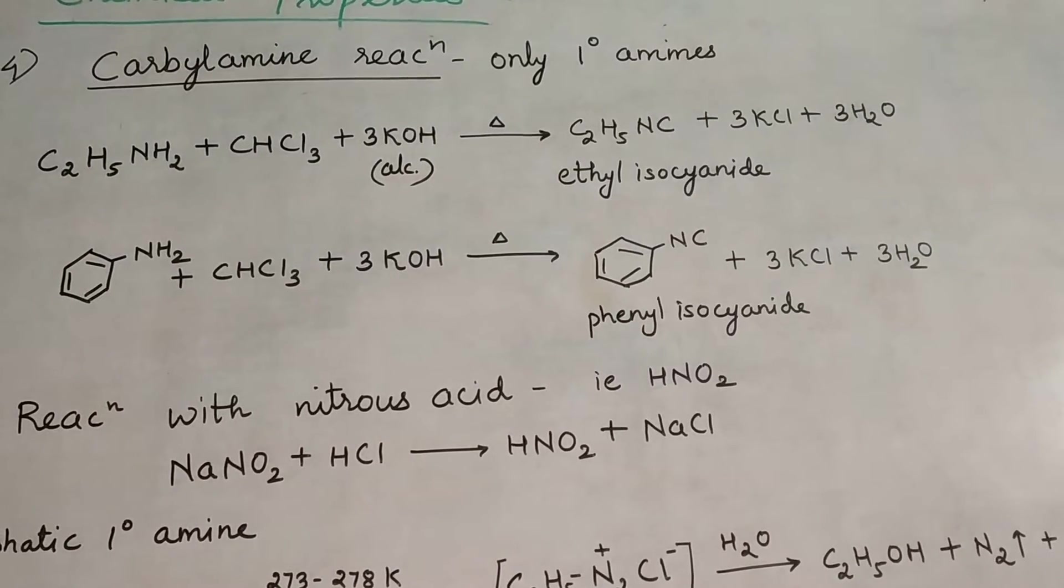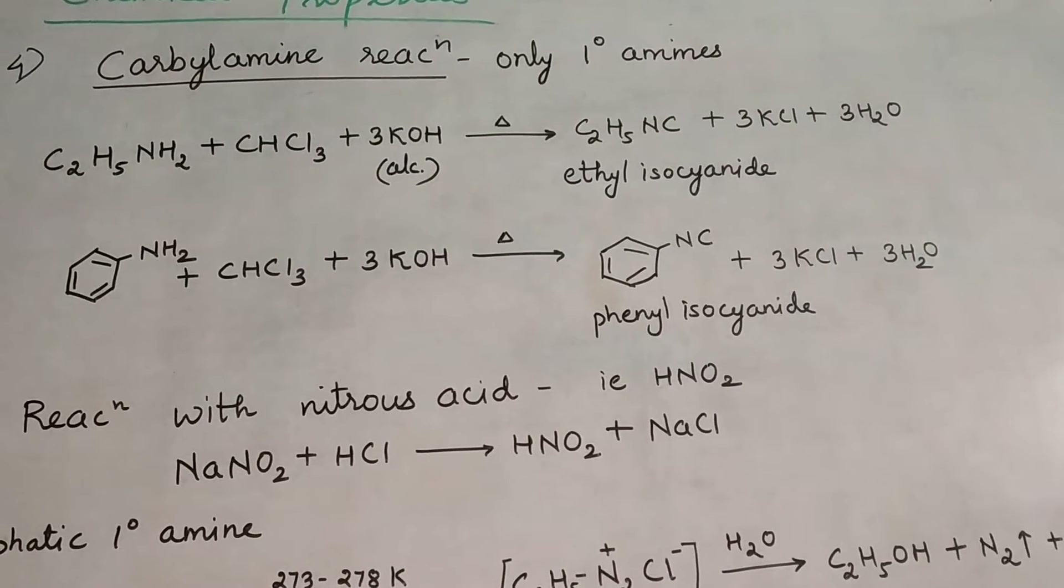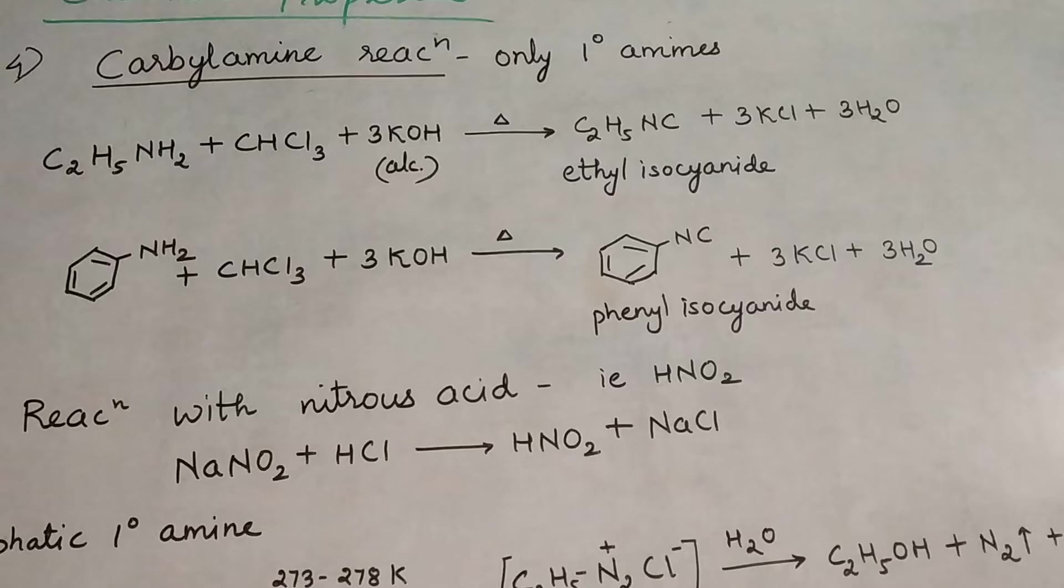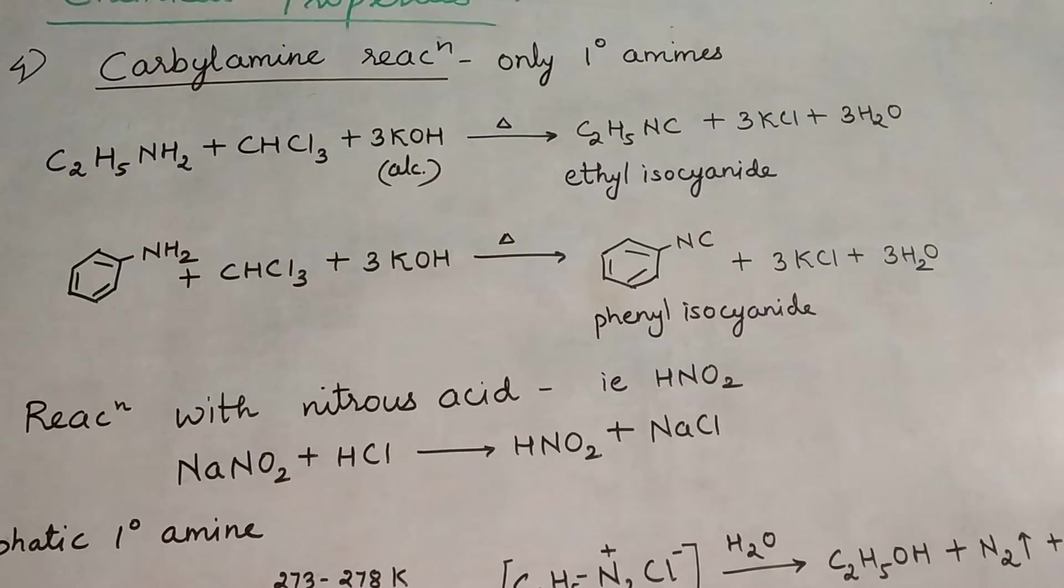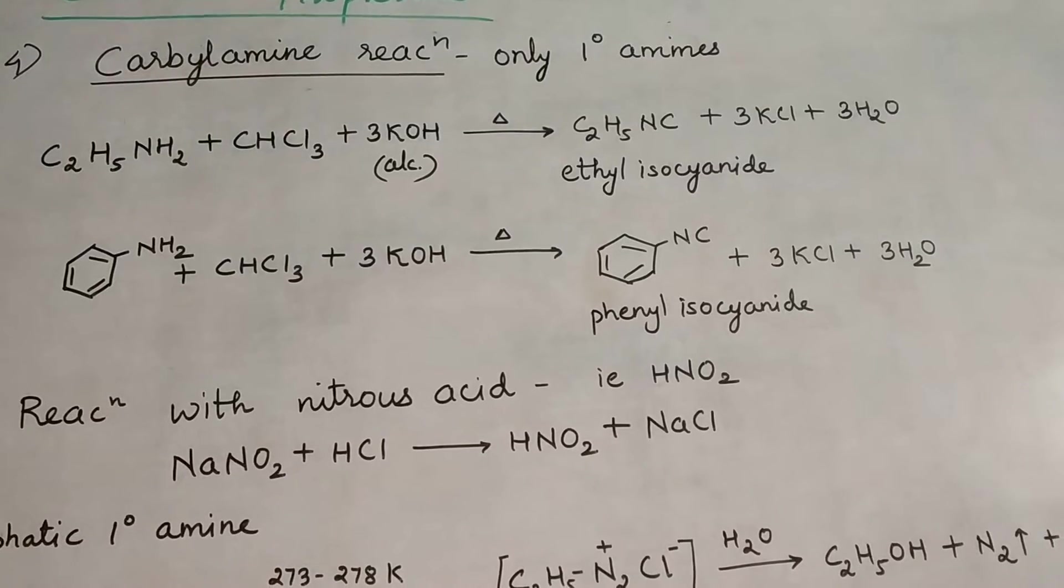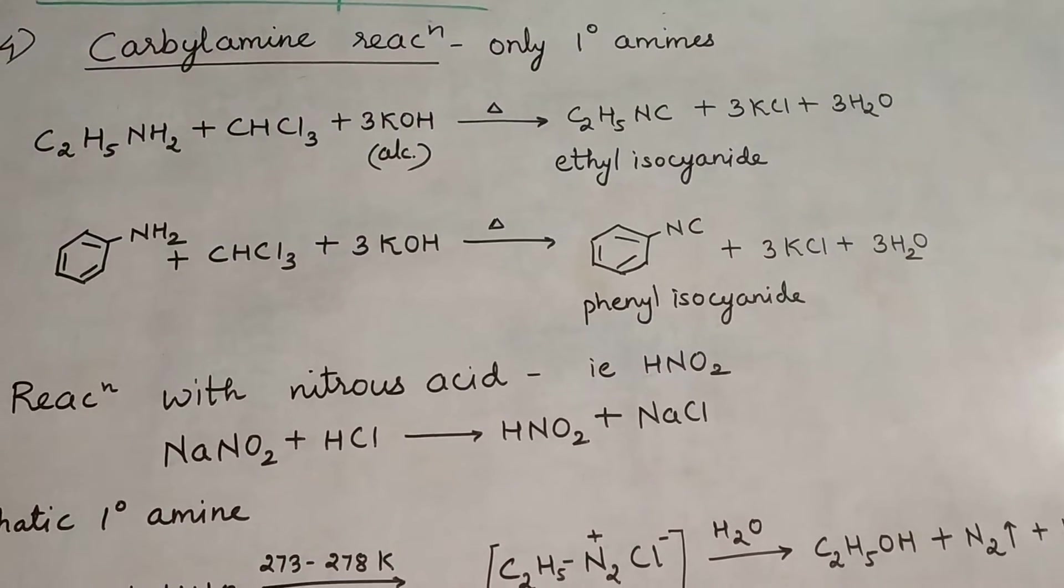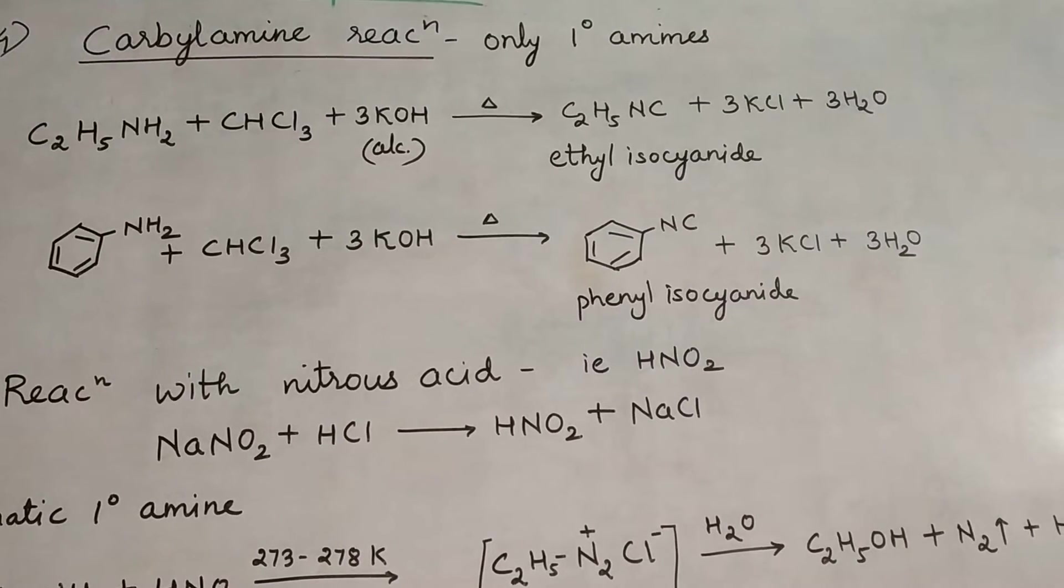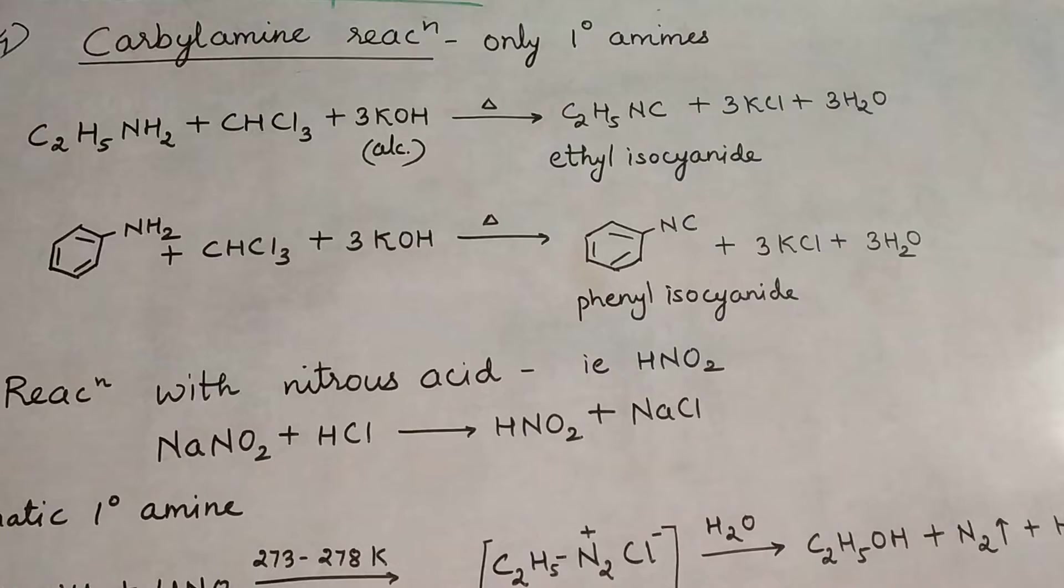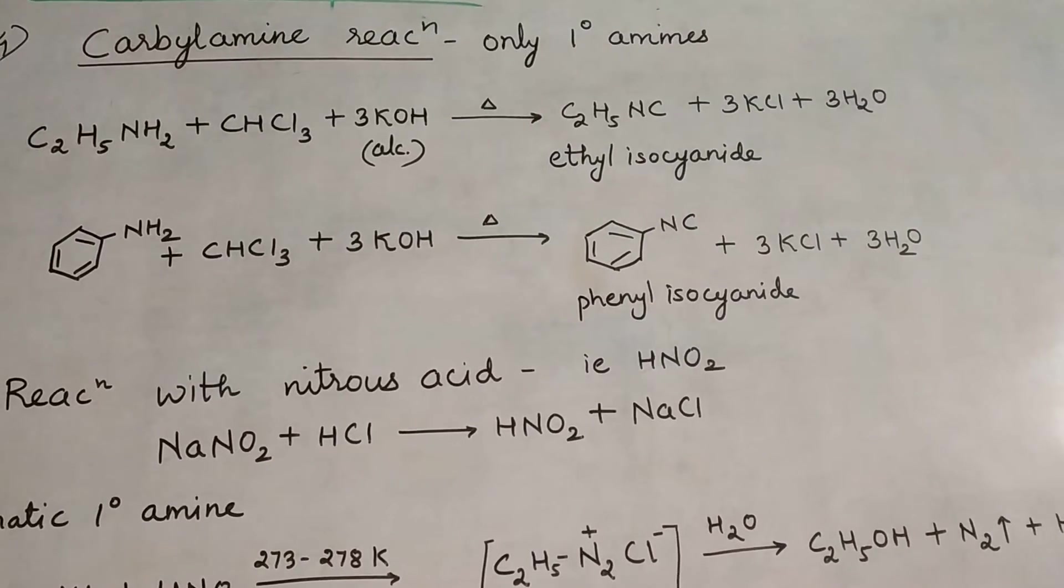Similarly, the carbyl amine reaction occurs with the aromatic primary amine, aniline. Aniline is treated with CHCl3 and 3 moles of alcoholic KOH. After heat treatment, phenyl isocyanide forms. The hydrogen atoms leave, carbon bonds there, and the byproducts are the same: 3KCl and 3H2O.